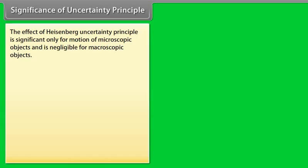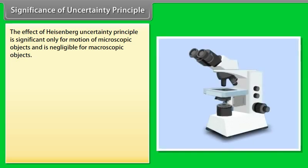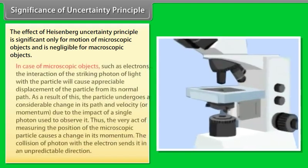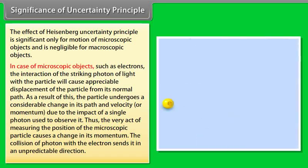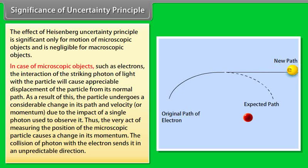Significance of the Uncertainty Principle: The effect of Heisenberg's uncertainty principle is significant only for the motion of microscopic objects and is negligible for macroscopic objects. In the case of microscopic objects such as electrons, the interaction of the striking photon of light with the particle will cause an appreciable displacement of the particle from its normal path. As a result, the particle undergoes a considerable change in its path and velocity or momentum due to the impact of a single photon used to observe it. Thus, the very act of measuring the position of a microscopic particle causes a change in its momentum.